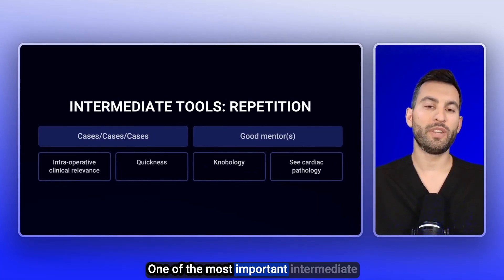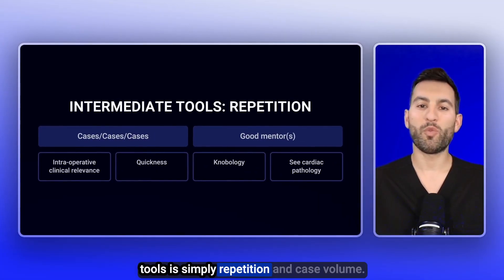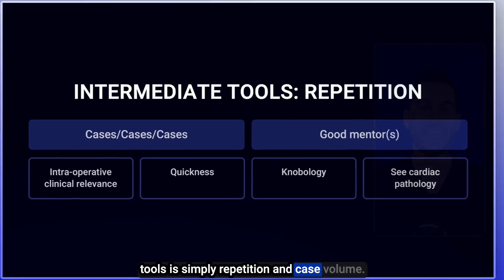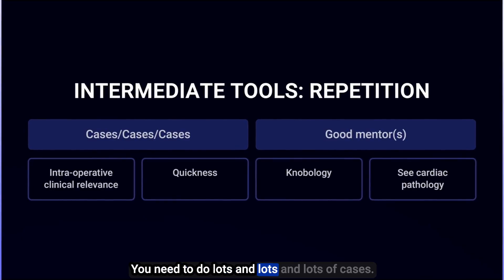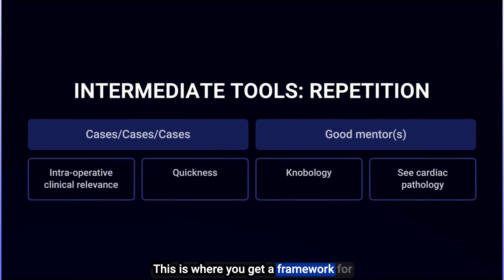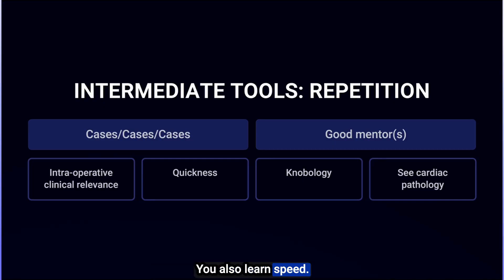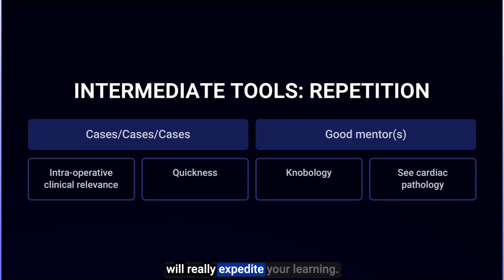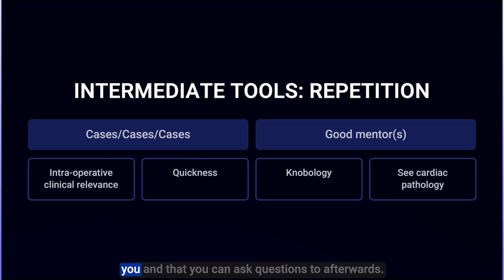The next stage, stage two, is the intermediate stage of TEE learning. This is where you can diagnose simple heart pathology correctly and also properly use a TEE machine — referred to as knobology. One of the most important intermediate tools is simply repetition and case volume. You need to do lots and lots of cases. This is where you get a framework for the intraoperative clinical relevance of what you've been learning, you learn speed, you learn knobology, and doing this with good mentors will really expedite your learning.